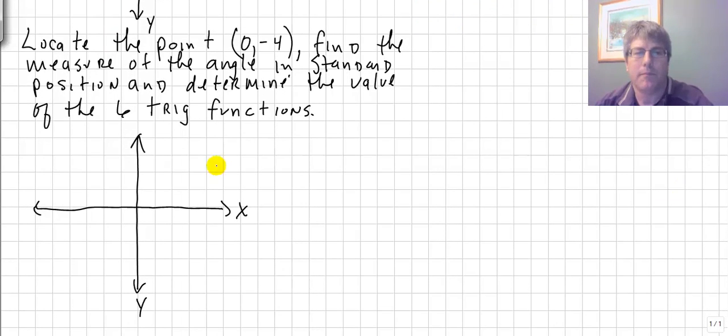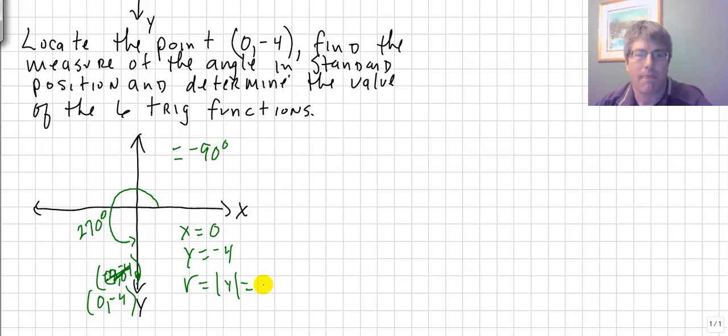So let's do another sample problem. Let's locate the point 0, negative 4. We'll find the measure of the angle in standard position, and determine the value of the six trig functions. So let's take a look at the point 0, negative 4. That's 0 on the x, negative 4 on the y. That is down here. So that is our quadrantal angle of 270 degrees. So my ordered pair here, 0 on the x, negative 4 on the y. Now this will also be the equivalent of a negative 90 degree angle, if we went in the opposite direction. So just something to keep in mind. So let's take a look and see what we have here. So we have x value of 0, a y value of negative 4,